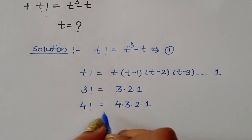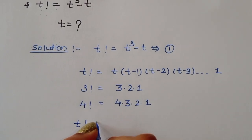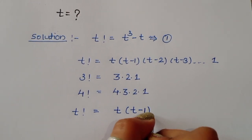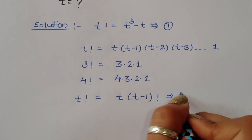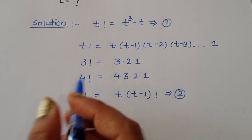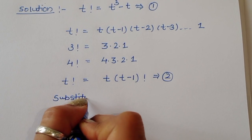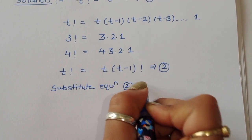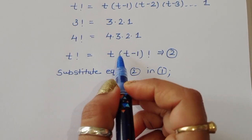In this way, we can write factorial of t as t times (t minus 1) factorial. This is equation number 2. We have to substitute equation 2 into equation 1.